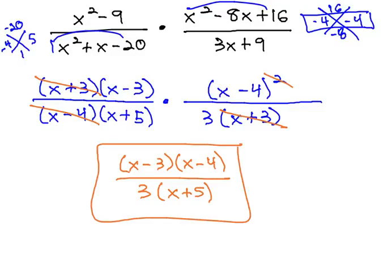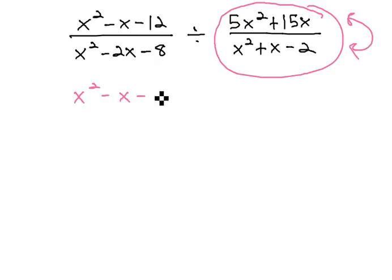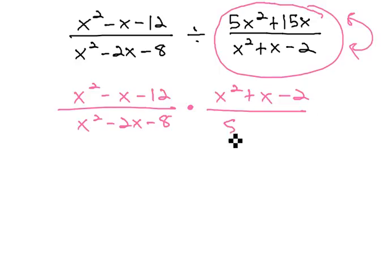Let's try a problem that's also a division problem. Division is really the same as multiplication, with the extra step that we're going to multiply by the reciprocal. So, we're actually doing x squared minus x minus 12, over x squared minus 2x minus 8, times x squared plus x minus 2, over 5x squared plus 15x.